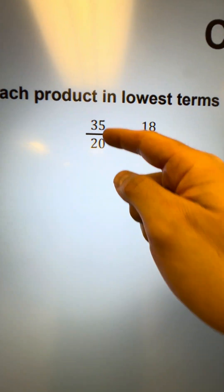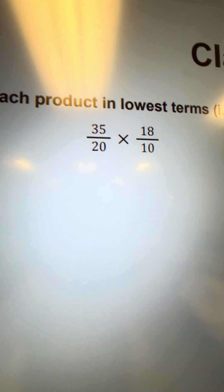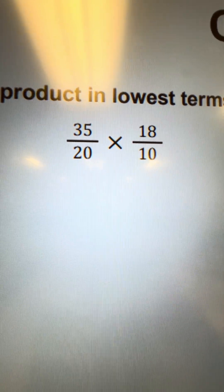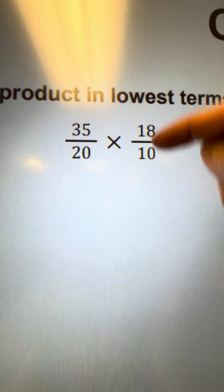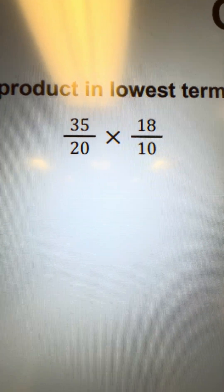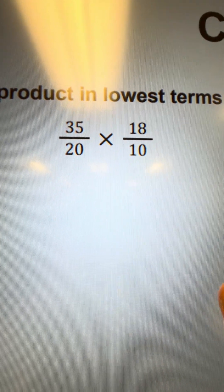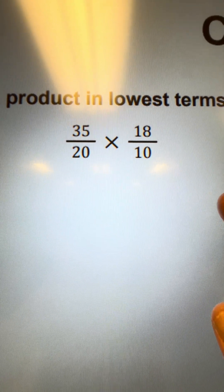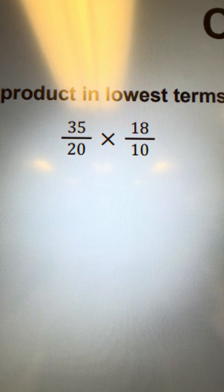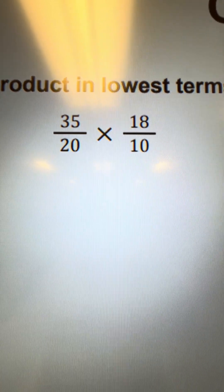Here's the first one: 35 twentieths times 18 tenths. What I like to start off with first is the prime factorization of each of these numbers in order to organize the work. Because remember, your goal when you multiply the fractions in the end is to make sure you end up with the simplified answer. So to do that, you have to eliminate the common factors.